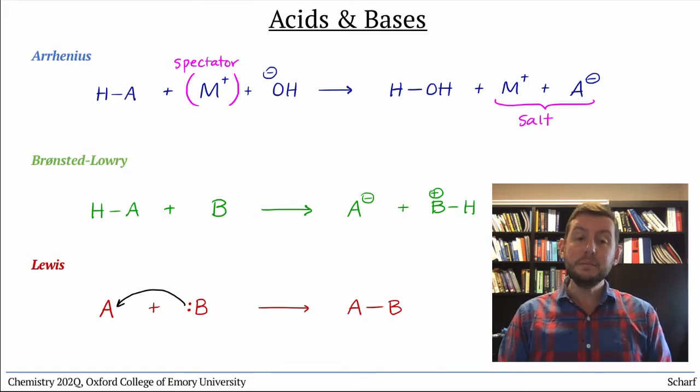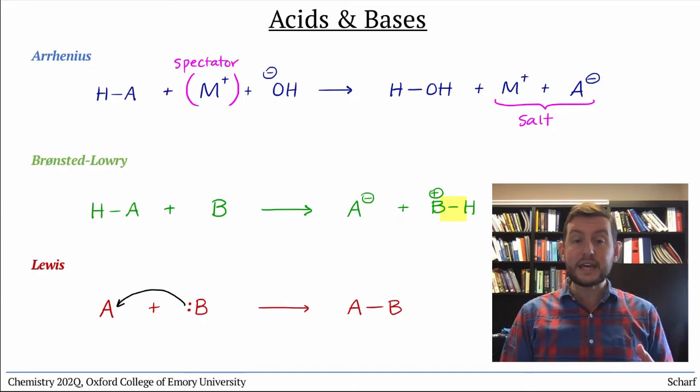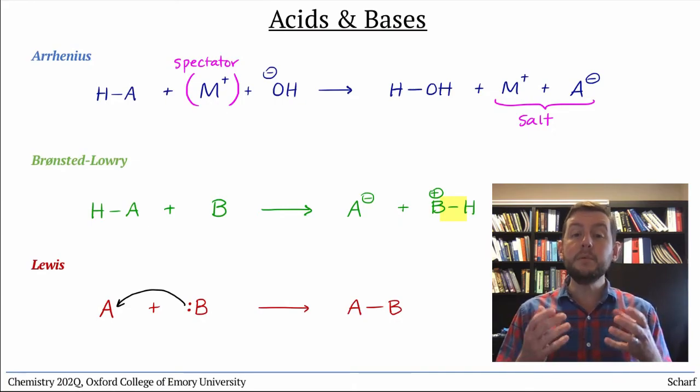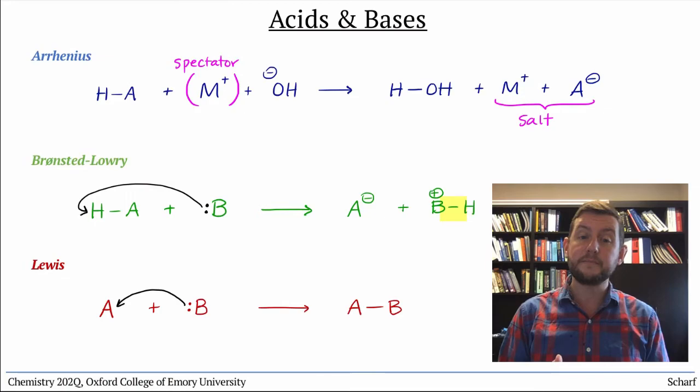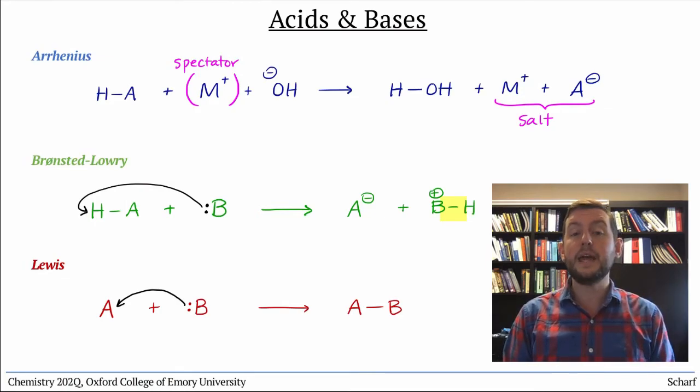A similar curved arrow can be used for the Bronsted-Lowry acid-base reaction. A new bond is formed between B and H, and the electrons in that bond came from the base donating a pair of electrons to the hydrogen, while the bond between H and A simultaneously breaks, and those electrons remain with A.